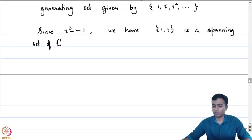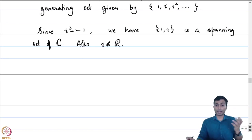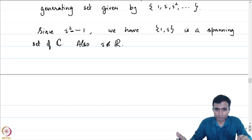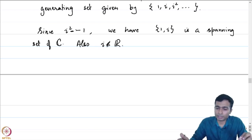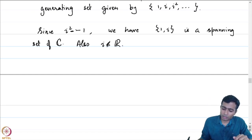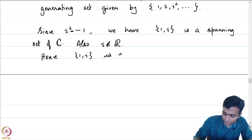Since i squared equals minus 1 in C, the set {1, i} is a spanning set of C. Also, i does not belong to R — because if i were in R, that would mean x plus ⟨x²+1⟩ equals a + ⟨x²+1⟩ for some real number a, meaning x minus a is in the ideal generated by x squared plus 1, which cannot be since x minus a has degree 1. So i does not belong to R, and therefore 1 and i are linearly independent, making {1, i} a basis of C over R.